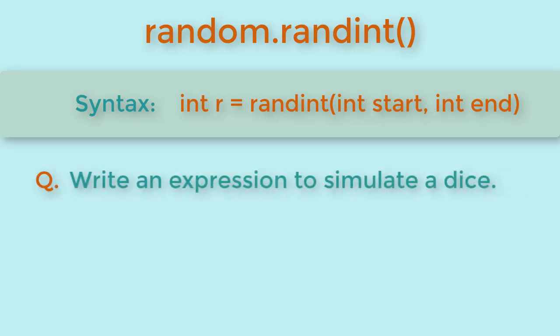The question that could be asked on this is to write an expression to simulate a dice. To simulate a dice we will write random.randint(1, 6). This will give random number from one to six.